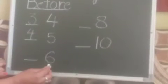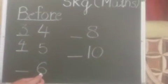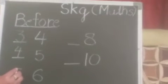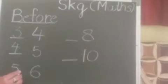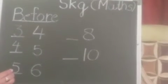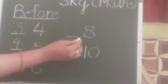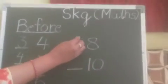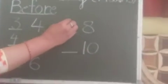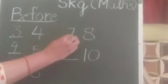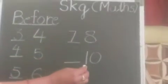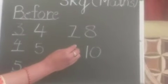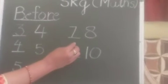Here I write 6. What comes before 6? 5. Here I write 8. What comes before 8? 7. Here I write 10. What comes before 10? 9.